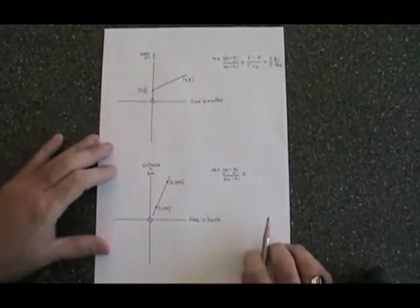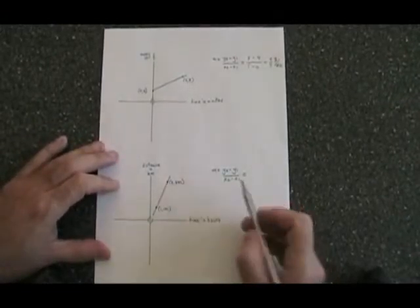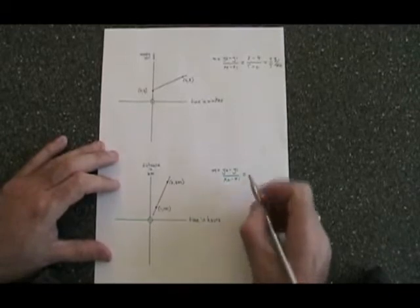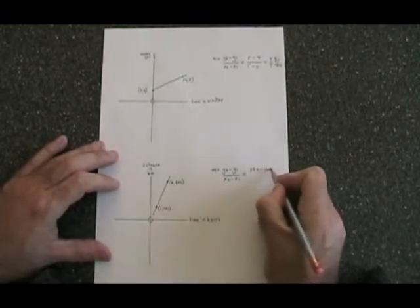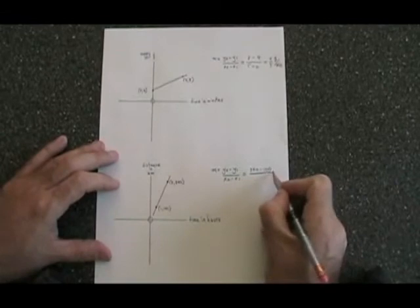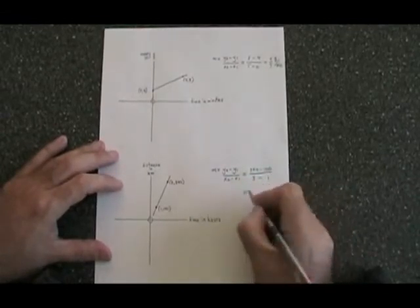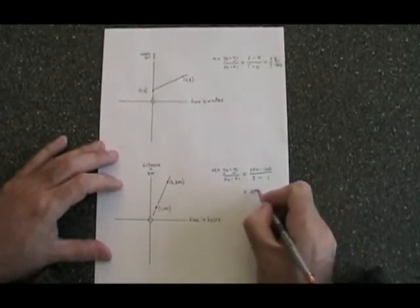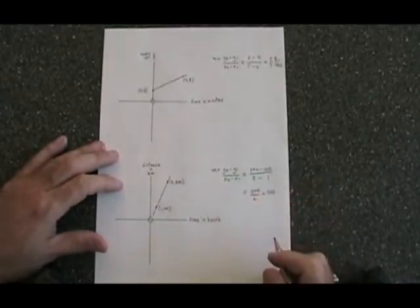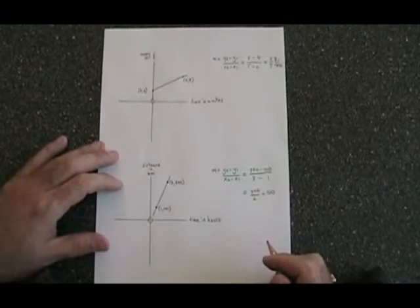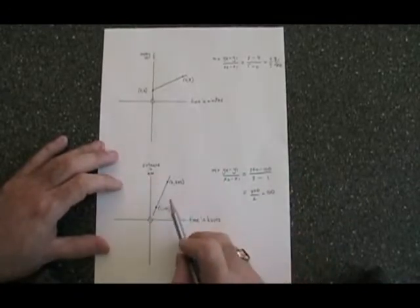In the second example, I'm calling this point 2. So using my slope formula, I get 300 minus 100 over 3 minus 1, which simplifies to 200 over 2, or 100. The unit, again, is y per x: kilometers per hour.